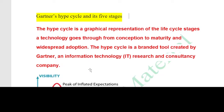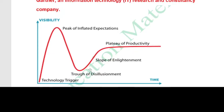There are five key stages. The first is Technology Trigger, followed by Peak of Inflated Expectations, Trough of Disillusionment, Slope of Enlightenment, and Plateau of Productivity.